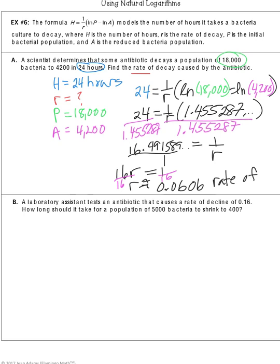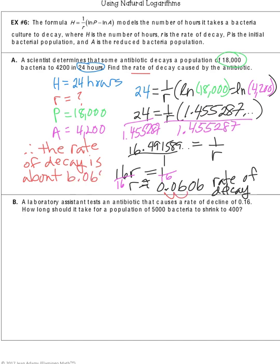That is your rate of decay in decimal form. Converting to a percentage by moving the decimal two places, the rate of decay is about 6.06%.